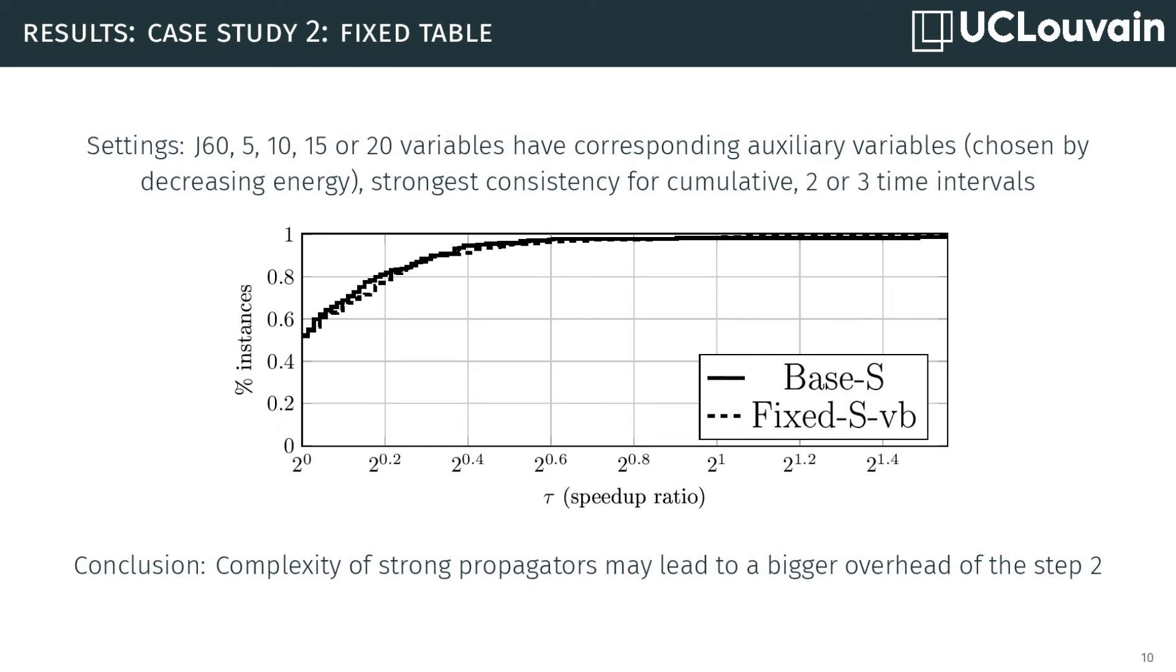On the J60 instances, the results were not so good. Here, the methodology brings an improvement in 50% of the cases only. Moreover, the improvement is at most a division by 2 of the time. We think this is due to the complexity of the energetic reasoning propagator we used in the model. We hypothesize that the improvement of time during step 3 brought by the table is totally subsumed by the exponentially growing time of using the energetic reasoning. But this requires more experiments to confirm.